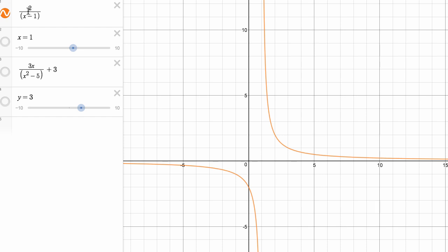And whenever you get a non-zero thing over zero, that's a good sign that you might be dealing with a vertical asymptote. In fact, we can draw that vertical asymptote right over here at x equals one.